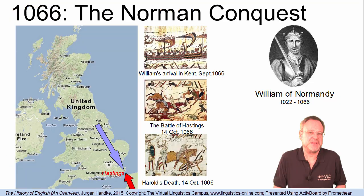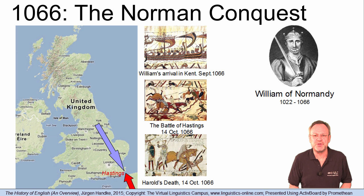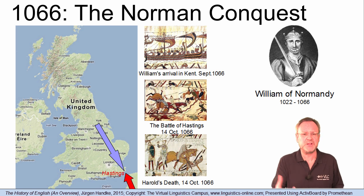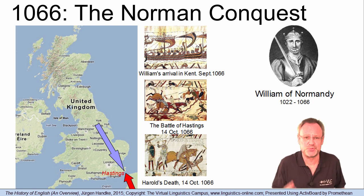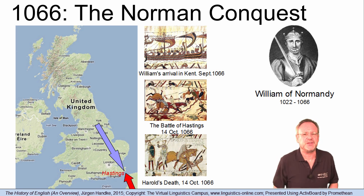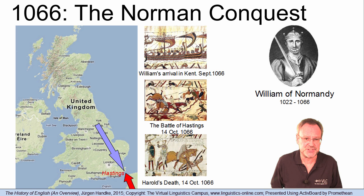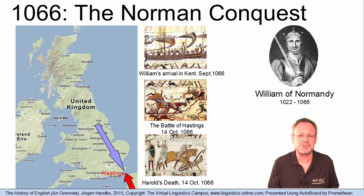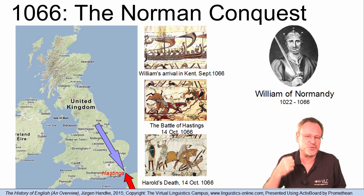The beginning of the Middle English period coincides with the Battle of Hastings, the key event in the Norman conquest of England, when William, Duke of Normandy — after the battle known as William the Conqueror — defeated the English under King Harold II in October 1066. The Norman conquest brought massive changes to England's political and social structures, and it had an enormous impact on the English language.